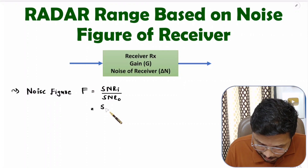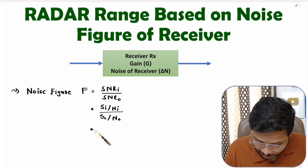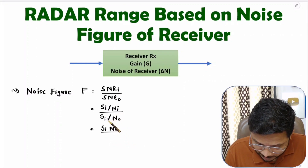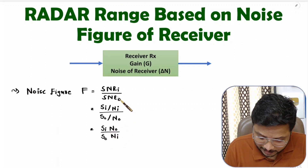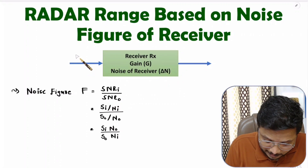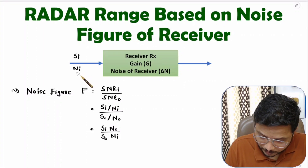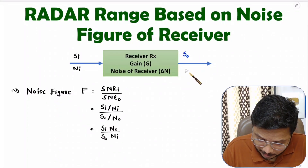Signal-to-noise ratio at input is signal power at input divided by noise power at input, and SNR at output is signal power at output divided by noise power at output. So N0 goes to the numerator giving Si × N0, and in the denominator we have signal at output and noise at input. Here at the output side we have signal power at output and noise power at output.